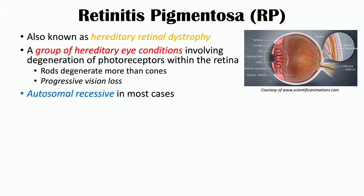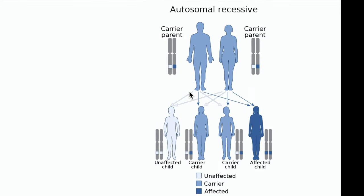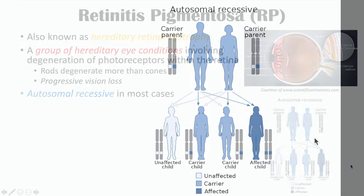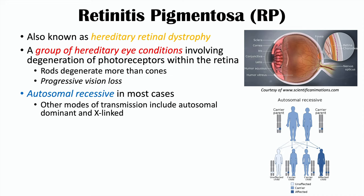This condition is a group of hereditary eye conditions due to gene mutations. Most cases are autosomal recessive in nature, meaning you need two copies of an affected allele — a version of a gene — in order to have this condition. Looking at a diagram where both parents are carriers, one in four children will be affected because one in four will have both copies of the affected allele. Approximately 60 to 70 percent of cases will be autosomal recessive.